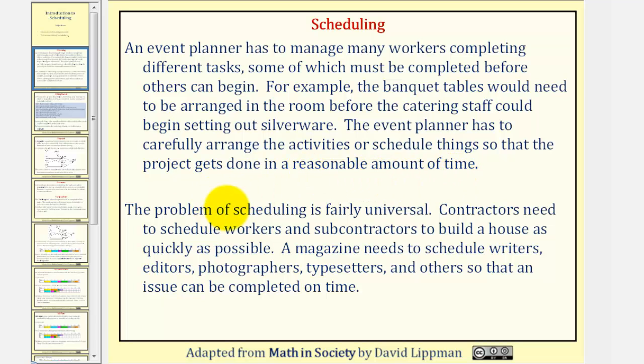The problem of scheduling is fairly universal. Contractors need to schedule workers and subcontractors to build a house as quickly as possible. A magazine needs to schedule writers, editors, photographers, typesetters, and others so that an issue can be completed on time.